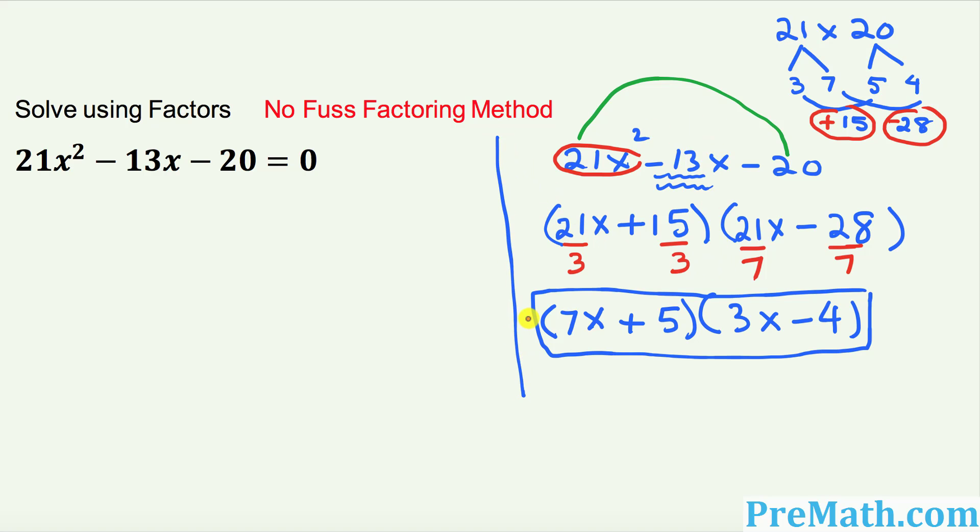So once we have got this one, I want you to go ahead and move these factors for this part and move these factors for this part right up here. So I can write this quadratic equation as 7x plus 5 times 3x minus 4 equal to 0.